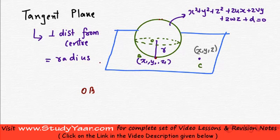OB is essentially the radius which is a normal vector to this plane. So OB is going to be perpendicular to BC.